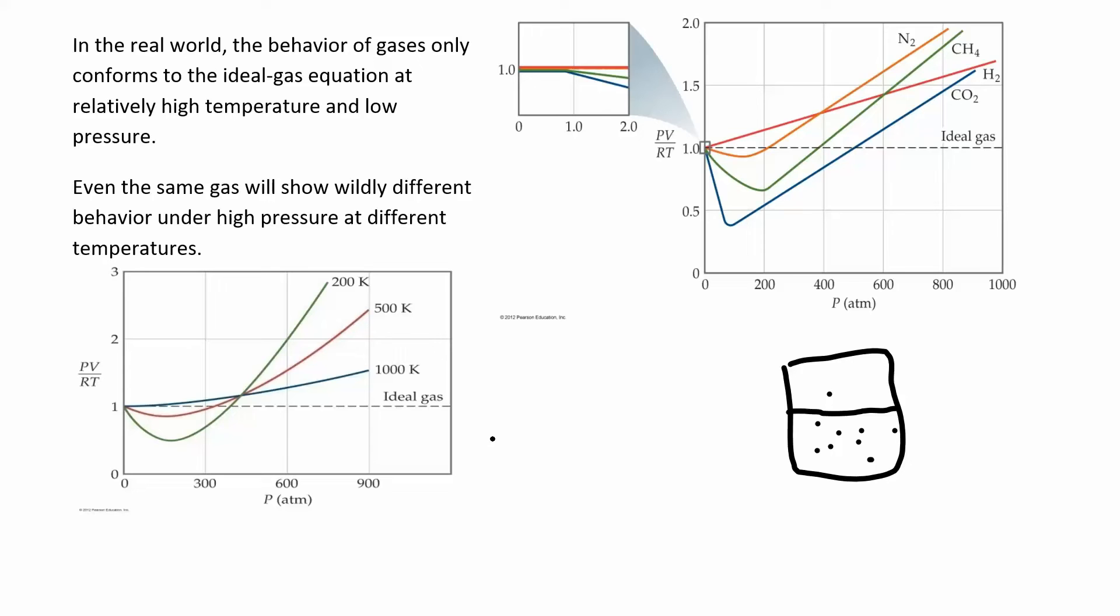Think about what happens at low temperatures. You take this gas and decrease the temperature. At lower temperatures, they're moving slower, hitting each other more. There's more of a chance that they're going to start to stick together. You can start to see a phase change from a gas to a liquid. At low temperatures and high pressure, you start to see less of an ideal behavior.